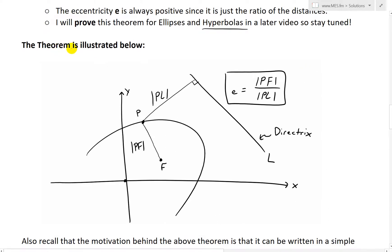And here again, the theorem is illustrated below. So you have the directrix line like this. You have this curve across there at any point P. The distance from that to the focus is going to be PF. This distance is PL. And the ratio PF over PL equals to E.